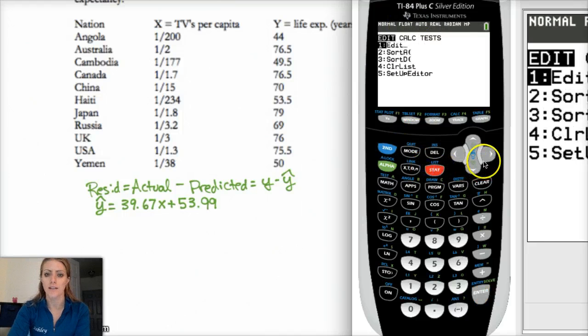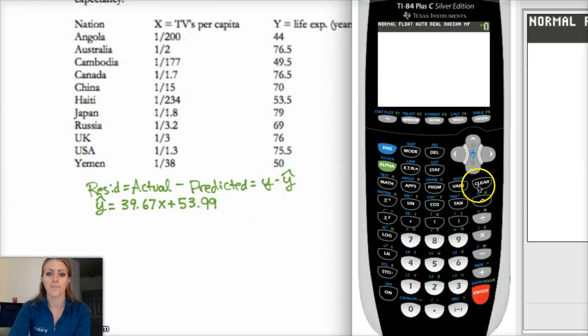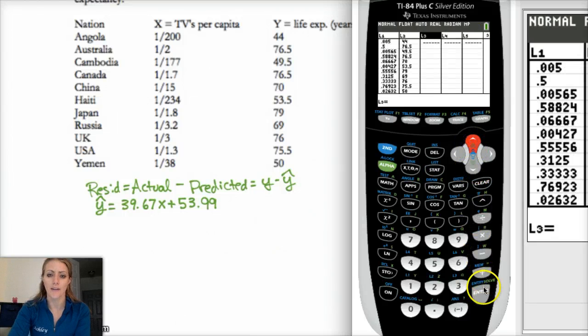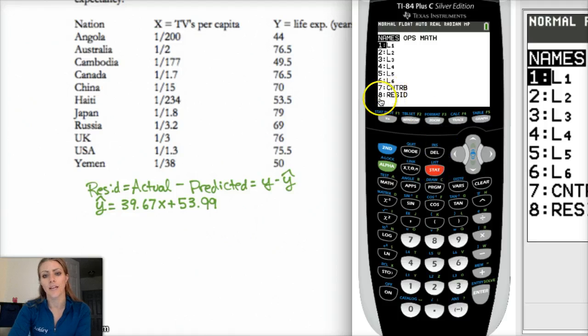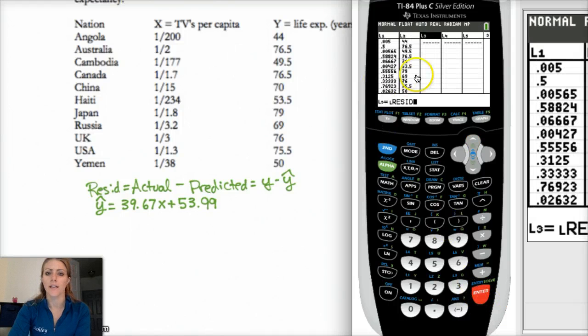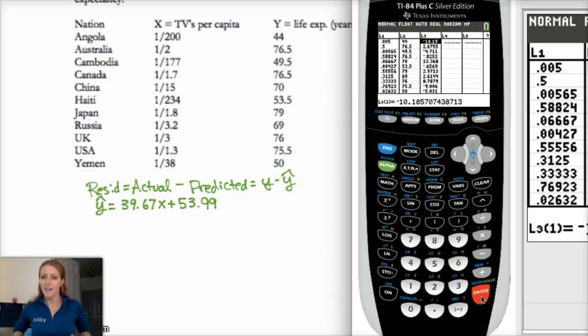Then you can go back with your stat edit, and then highlight L3. Hit enter so that you're editing the entire list. And then go second stat and go down to resid. Eight. Hit enter. Okay, so now L3 is going to populate with the residuals. Hit enter. And voila! I have my residuals.